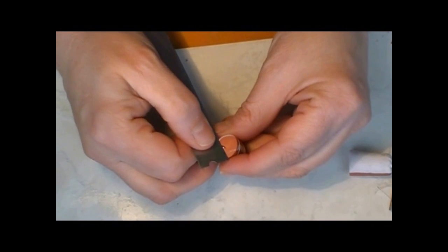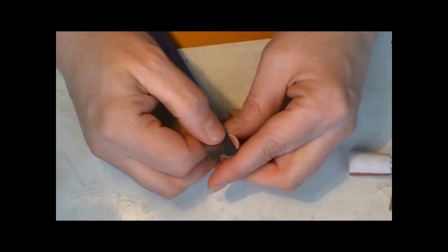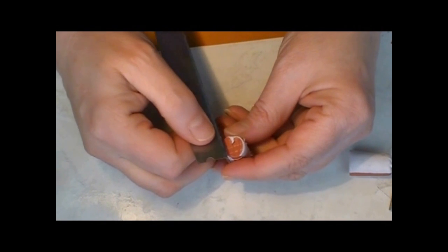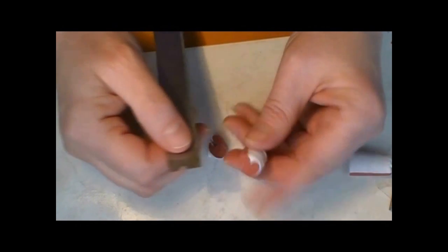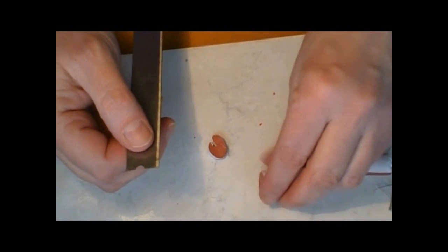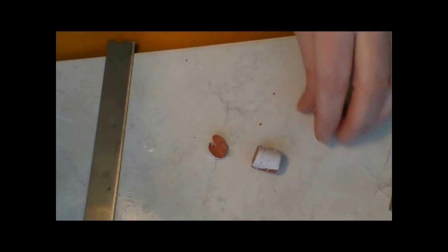Now since this is pretty thick, this will need to bake for a while. This will need to bake whatever your clay says for temperature for probably about 15 minutes because that's a pretty thick piece of clay. So let me get this baked off, I'll tie off the rest of this, I'll get them baked and then I'll be back.